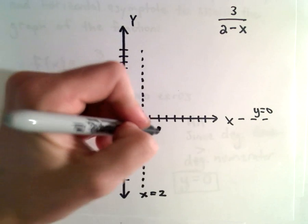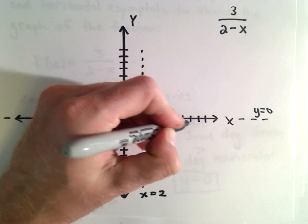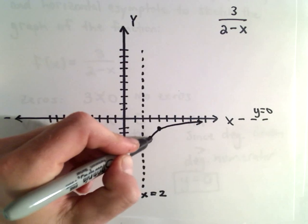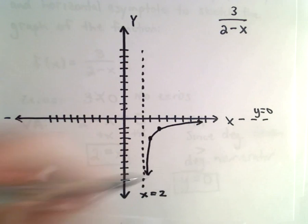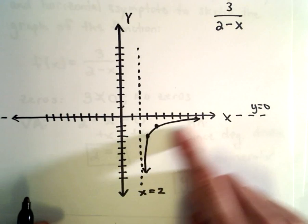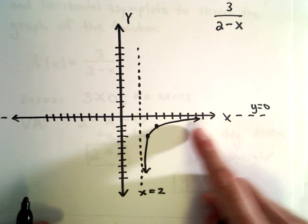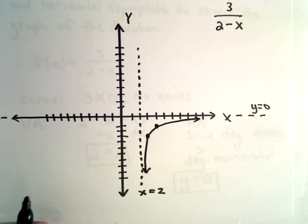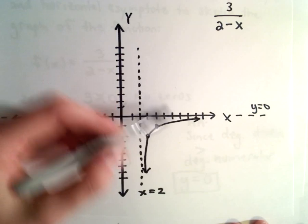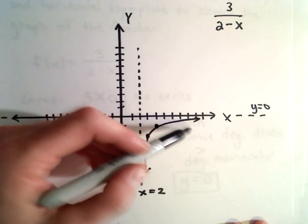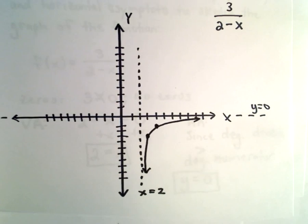And you can keep plotting points in, you'll see that your graph, the bottom right portion of it, gets close to that horizontal asymptote and it gets close to the vertical asymptote. I know it doesn't cross the x-axis again because we know there's no zeros.